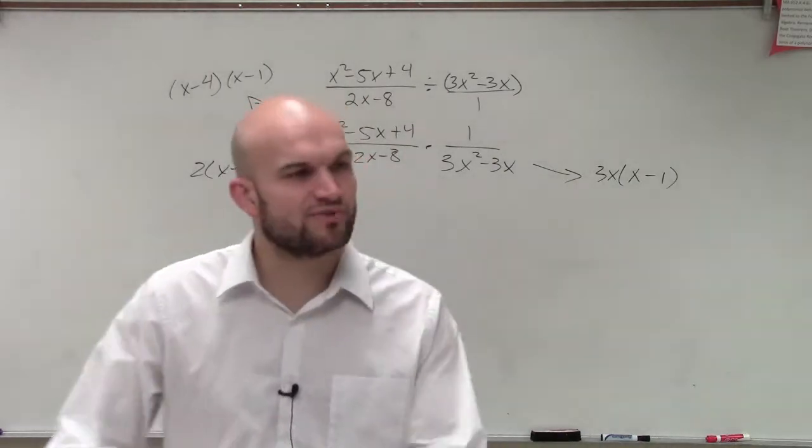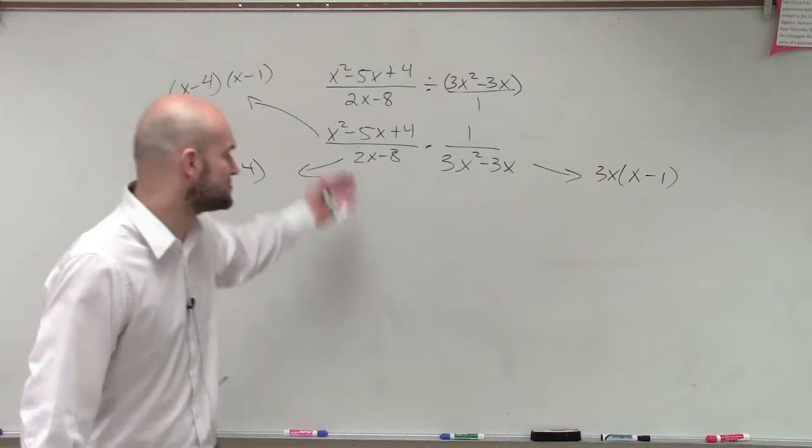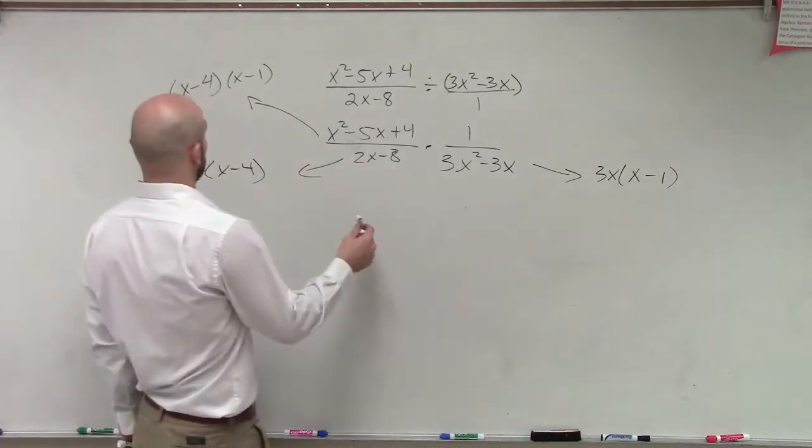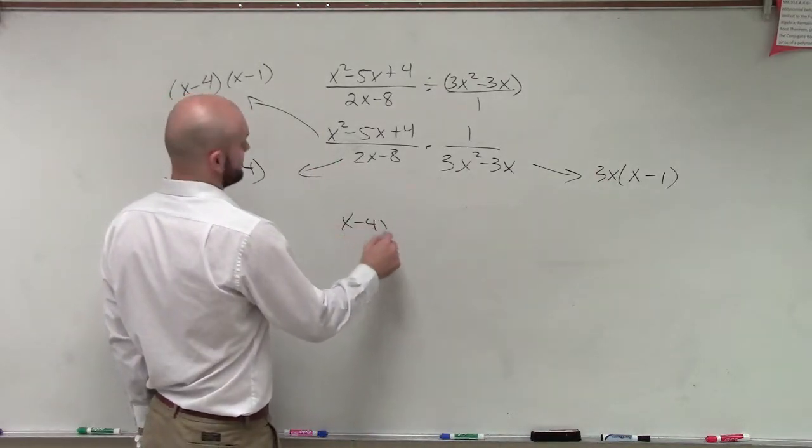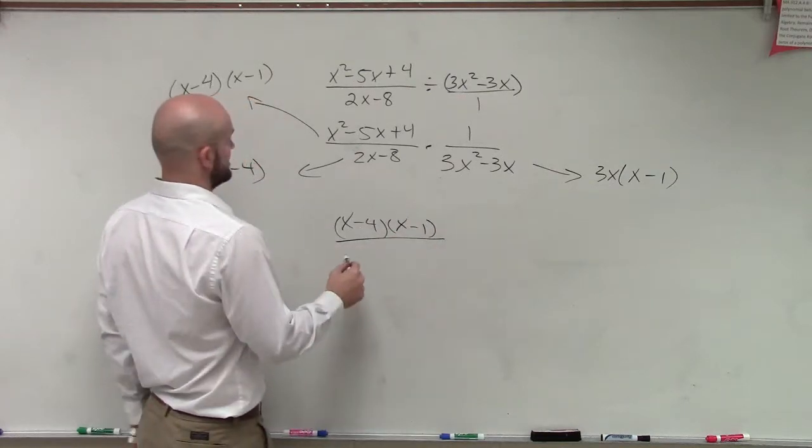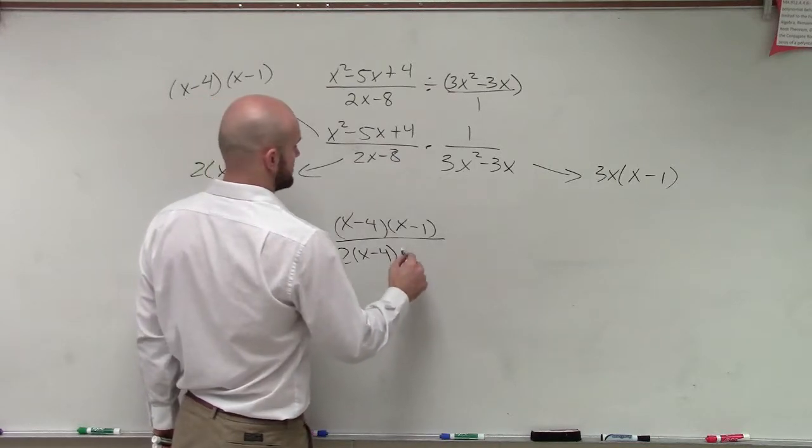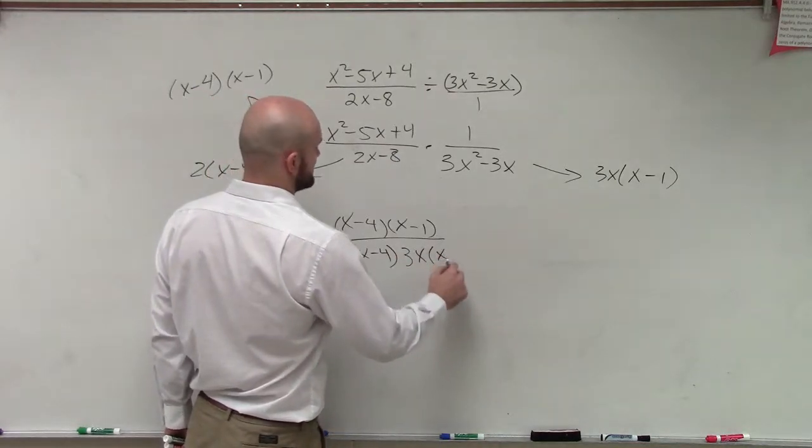You guys can see how I just rewrote them, I transferred them into factored form. Now, let's write the factored form in. So I'll have x minus 4 times x minus 1 divided by 2 times x minus 4 times 3x times x minus 1.